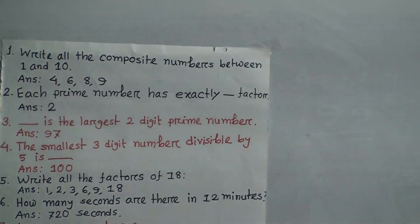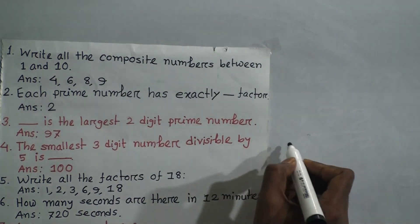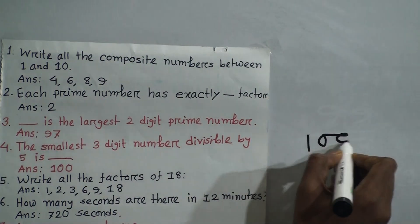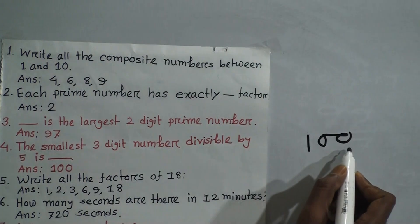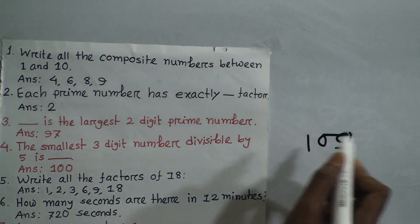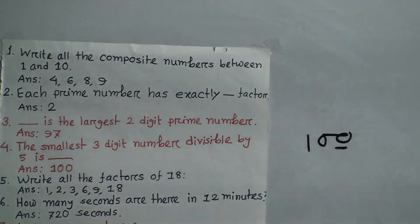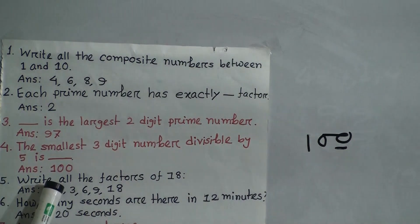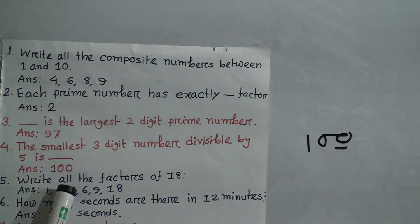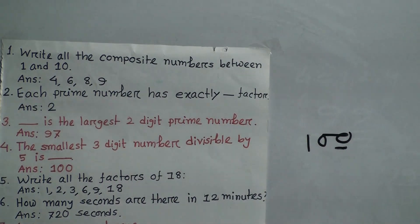Question 4: What is the smallest three-digit number divisible by 5? We know the smallest three-digit number is 100. If the ones place of a number is 0 or 5, then it is divisible by 5. Therefore, the smallest three-digit number divisible by 5 is 100.